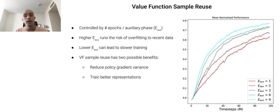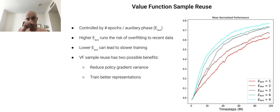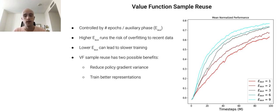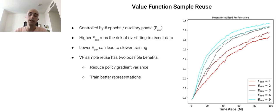This graph shows how varying the sample reuse of the value function impacts performance in PPG. We do this by varying the number of epochs performed during the auxiliary phase. We expect a tradeoff: using too many epochs risks overfitting to recent data, while using too few leads to slower training. In the graph on the right, we vary the number of auxiliary epochs from 1 to 9. We find that training with additional auxiliary epochs is generally beneficial, with performance tapering off somewhere around 6 to 9. There are two reasons that additional value function training might help: first, a more accurate value function leads to a lower-variance policy gradient; second, and less obviously, the additional value function training can lead to better representation learning. When these representations are shared with the policy, the policy is able to learn faster. In ProcGen environments, feature sharing between policy and value networks appears to play the more critical role.